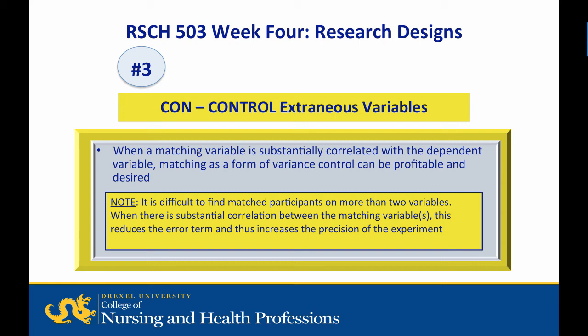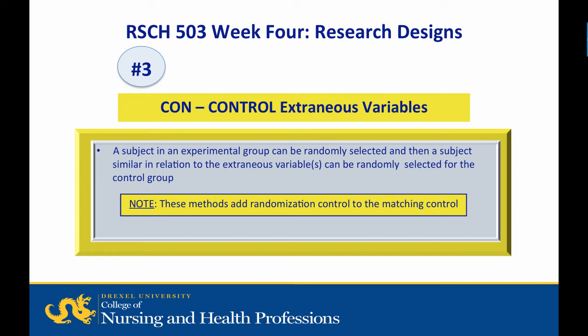Another technique used to control the influence of an extraneous independent variable is to match participants on that variable. When a matching variable is substantially correlated with a dependent variable, matching as a form of variance control can be valuable. Matching is limited, however, since it is difficult to match on more than two such variables in a sample study. In an experimental design, a subject in an experimental group can be randomly selected, and then a subject similar in relation to the extraneous variable can be randomly selected for the control group. These methods add randomization control to the matching control.